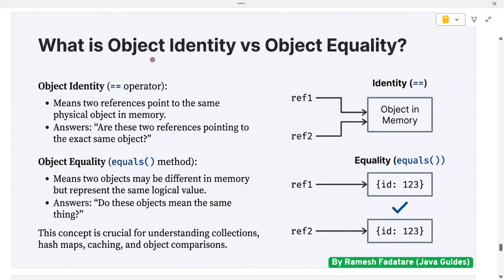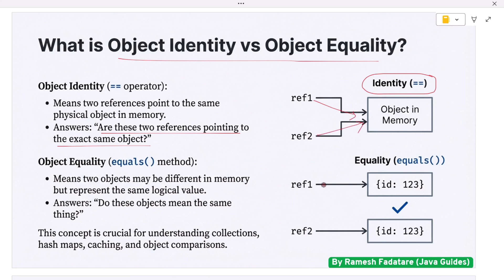What is object identity versus object equality? Object identity means two references point to the same physical object in memory — it answers: are these two references pointing to the exact same object? Object equality means two objects may be different in memory but represent the same logical value — it answers: do these objects mean the same thing? Java uses the '==' operator for identity and the 'equals' method for logical equality. This concept is crucial for understanding collections, HashMaps, caching, and object comparisons.